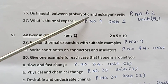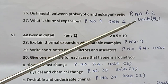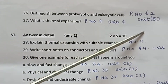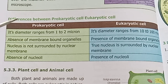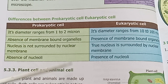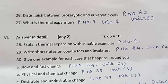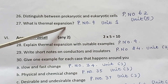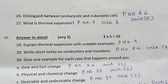Question 26: Distinguish between prokaryotic and eukaryotic cells. Refer to page number 62, Unit 5 — tabulation answer. Question 27: What is thermal expansion? Refer to page number 9, Unit 1.